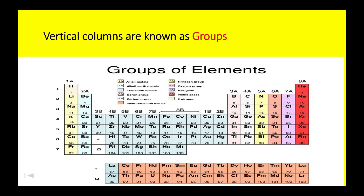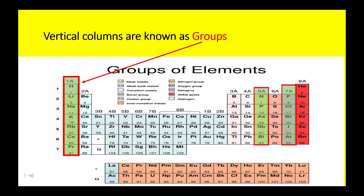In the Periodic Table, we have vertical columns and these vertical columns are known as groups. We have eight A groups and eight B groups, but most of the time we discuss A groups. Here I have highlighted group 1, group 5, and group 7 just to show you that these vertical columns are known as groups.